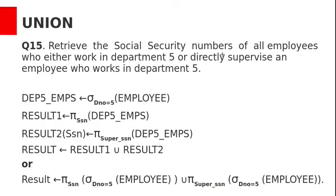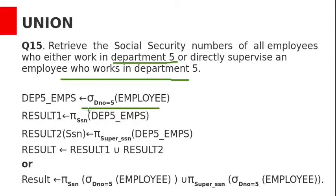Let us see one query: retrieve the social security number of all employees who either work in department number 5 or directly supervise an employee who works in department number 5. First, find the department number 5 employees using sigma D_number = 5 on the employee relation. From that, we need only the social security number, so project SSN from those department 5 employees. This gives us result 1.